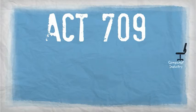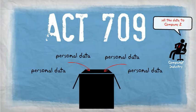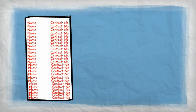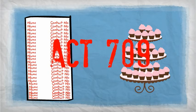This includes those who control and authorize the processing of personal data for the transactions. If you have a list of customers with their contact details for your part-time cupcake enterprise, for example, you may be subjected to Act 709.